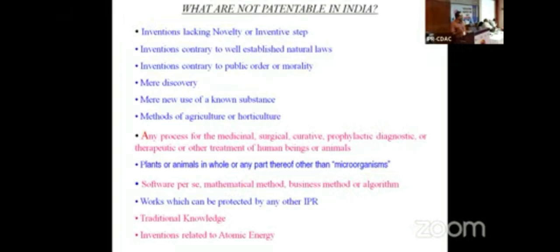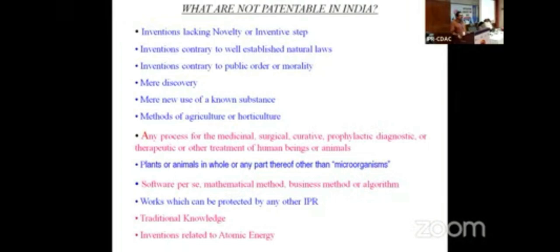If a doctor were allowed to patent a diagnostic method, he could take a monopoly and prevent all others — so such things are not allowed. Plants or animals as such are not patentable. Microorganisms are patentable if genetically modified. Any work protectable by another IPR cannot be protected under patent. Traditional knowledge — orally transmitted from generation to generation and not recorded — cannot be patented, and should not be. Inventions related to atomic energy also cannot be patented under Indian law.